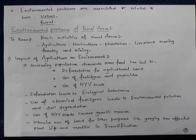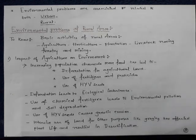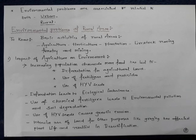Intensive use of land for purposes like grazing has affected plant life and resulted in desertification. Desertification means a soil stretch devoid of vegetation due to over-exploitation of the soil. Once the soil is devoid of vegetation, it will definitely have an adverse climatic effect — for example, the area may no longer receive rainfall in the future.